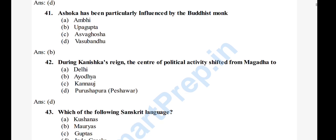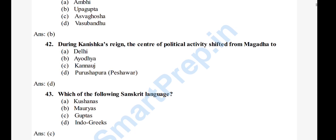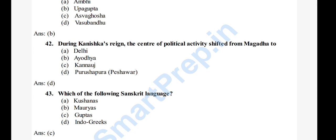Question 43: Which of the following made Sanskrit the language of patronage? Options: A) Kushans, B) Mauryans, C) Guptas, D) Indo-Greeks. The right answer is option C, Guptas. Sanskrit as a language of Brahminical dominion began during the Gupta period.